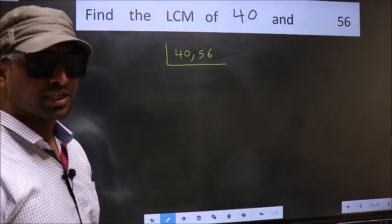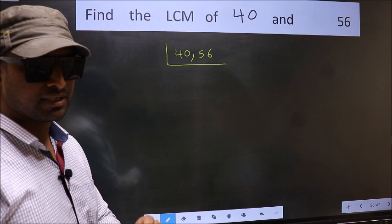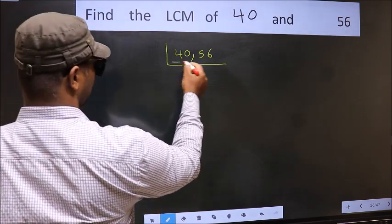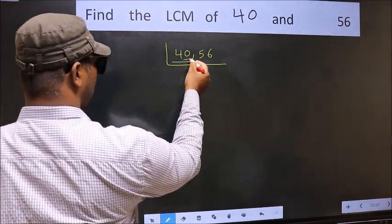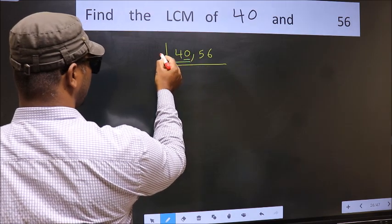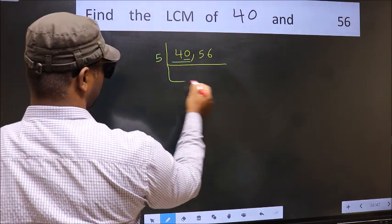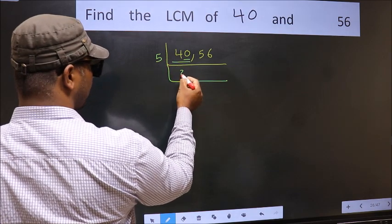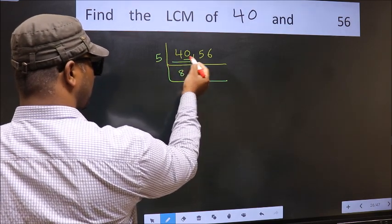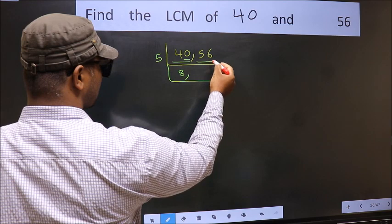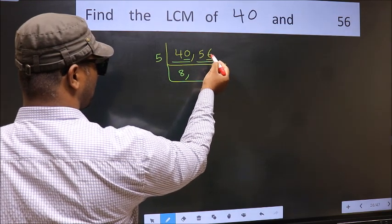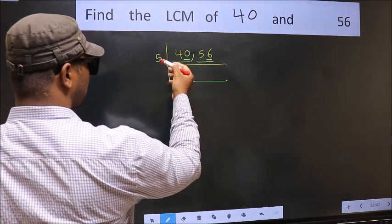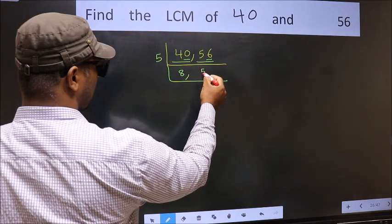Now you should focus on the first number which is 40. For this number the last digit is 0, so directly take 5. When do we get 40 in the 5 table? 5 eights are 40. The other number is 56. The last digit is neither 0 nor 5, so this is not divisible by 5. So we write it down as it is.